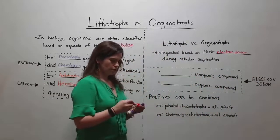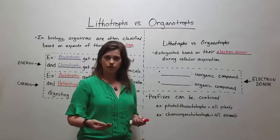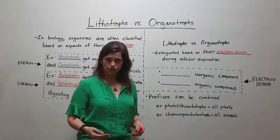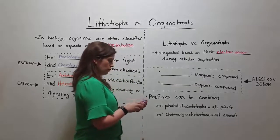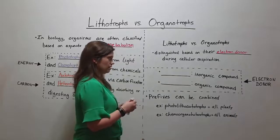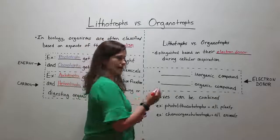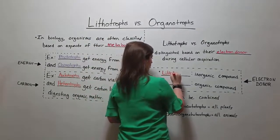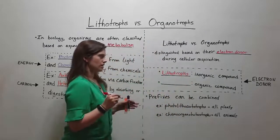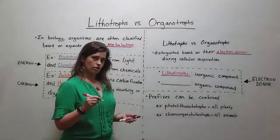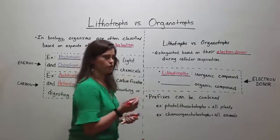During cellular respiration, there has to be some kind of compound that donates electrons that then go down an electron transport chain to help generate ATP. In lithotrophs, the compound used — that is, the electron donor — is an inorganic compound. In situations where the electron donor is an organic compound, we classify these organisms as organotrophs.